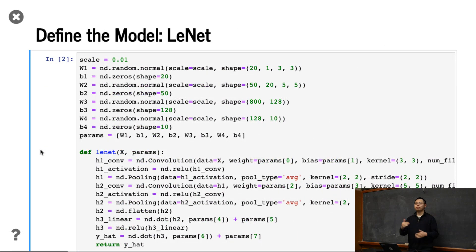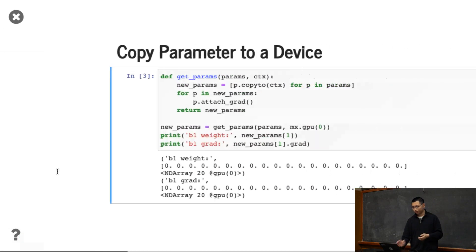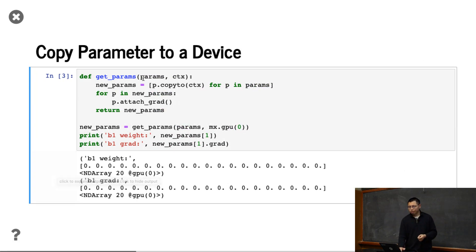Then we use LearnNet just from scratch. We define the parameters, define the LearnNet and do the things. One thing here is that the parameters itself is on CPU, so we need to copy the parameters to GPUs. What we do here is that we define a function get the parameters, given the parameters on CPU and given a context which is a GPU. For every parameter here, we're going to copy to this context, get the new parameters, and then attach gradients because we're going to compute the gradient. For example, we can show that if we copy to GPU zero, the first weight is already on GPU zero, and also the bias is on GPU zero.